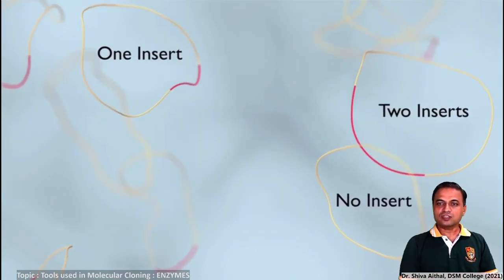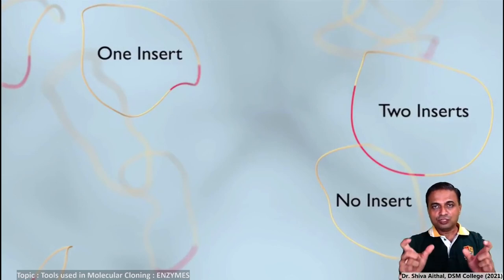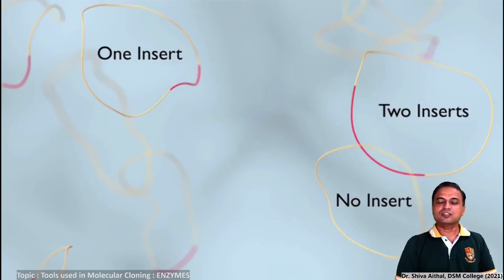You have two types of inserts here - one insert, second insert. What is the difference? You see interestingly, here only one gene of interest is introduced whereas here, the gene of interest has end-to-end ligated and double gene of interests have been inserted. That is also a probability. N number of probabilities are there when recombinant DNA technology is being carried out, when molecular cloning is being carried out. To avoid this, we have an array of enzymes which we call the DNA modifying enzymes.